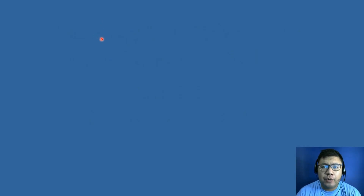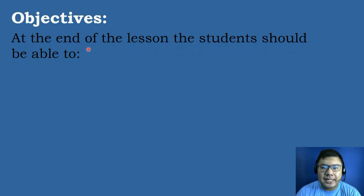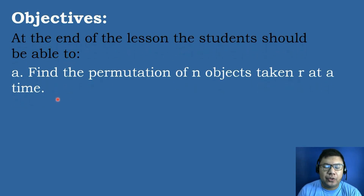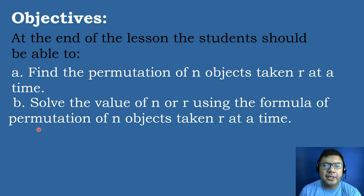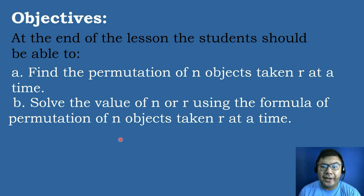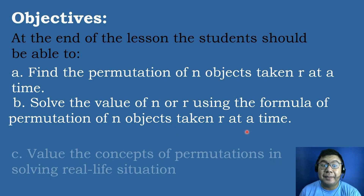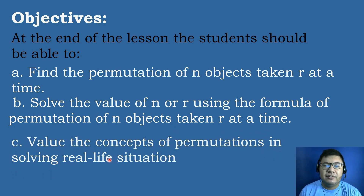Let's have the following objectives in today's topic. At the end of the lesson, the students should be able to: Letter A, find the permutation of N objects taken R at a time. Letter B, solve the value of N or R using the formula of permutation of N objects taken R at a time. And Letter C, value the concepts of permutation in solving real-life situations.